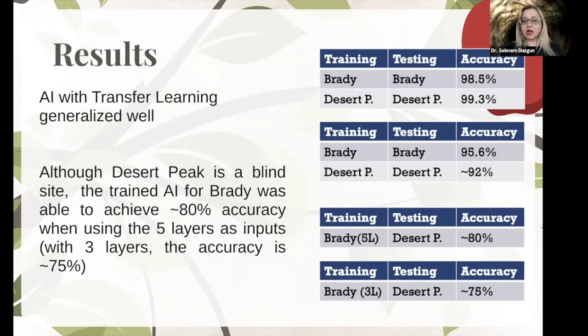And we have, you see here in parentheses, 5L and 3L. 5L represents five layer data sets. Five layer data set is including deformation and three layer data set is excluding the deformation. So even though we don't have deformation information for Desert Peak, we can still reach up to a certain amount of accuracy. So for our research purposes, we are still working on improving the accuracy. Those are initial results. There are several ways of increasing the accuracy. So if you are interested later on, I can also talk about these.